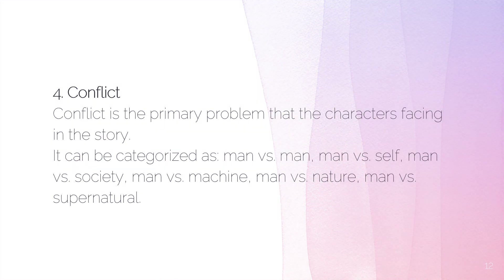Now let's proceed to conflict. Conflict is the primary problem the characters face in the story. It can be categorized as: man versus man, man versus self, man versus society, man versus machine or technology, man versus nature, or man versus supernatural.